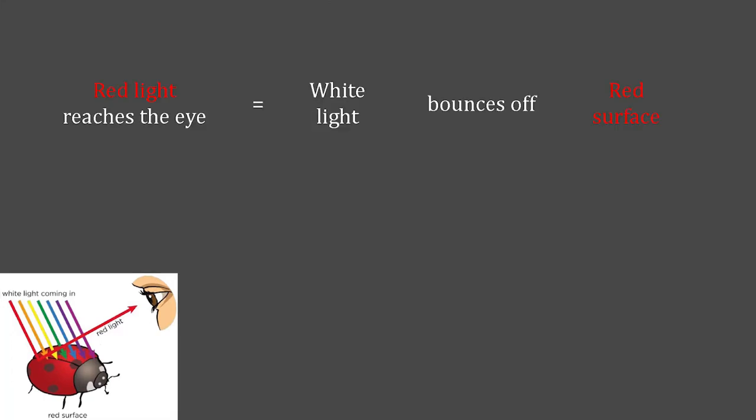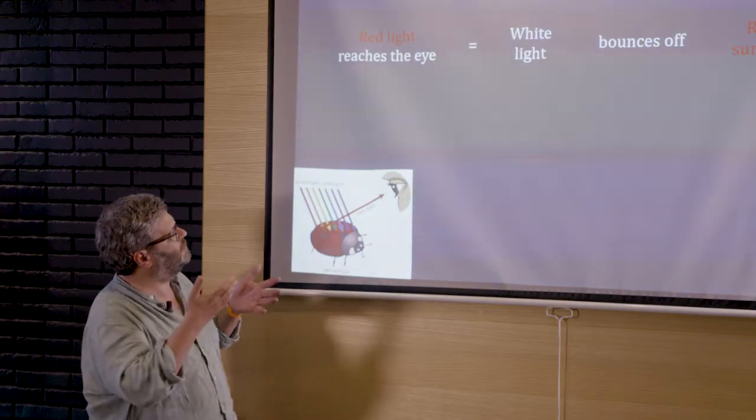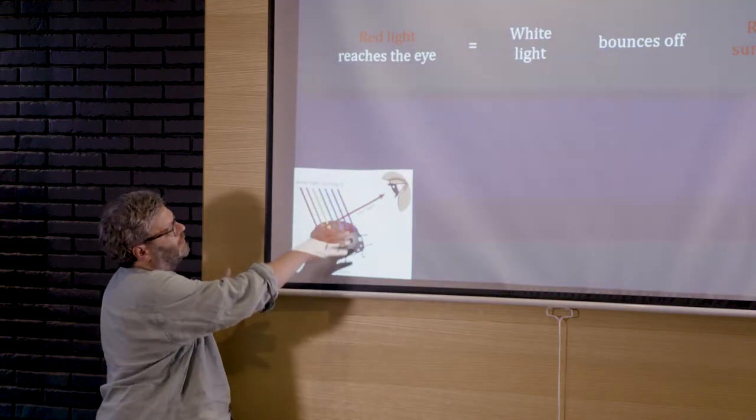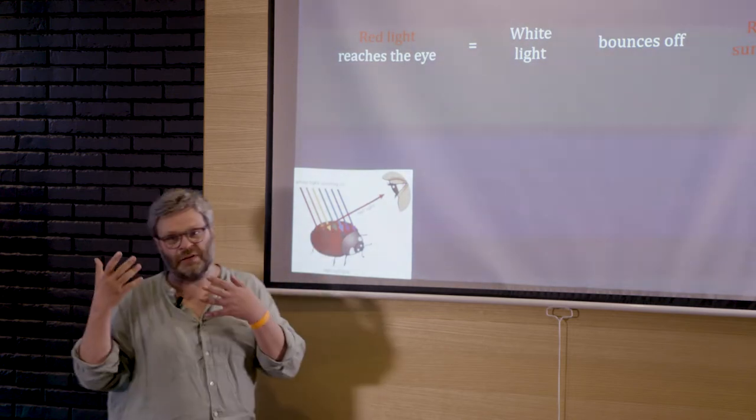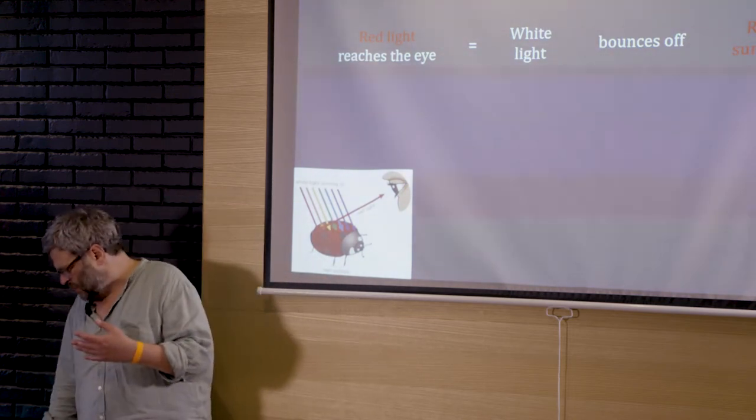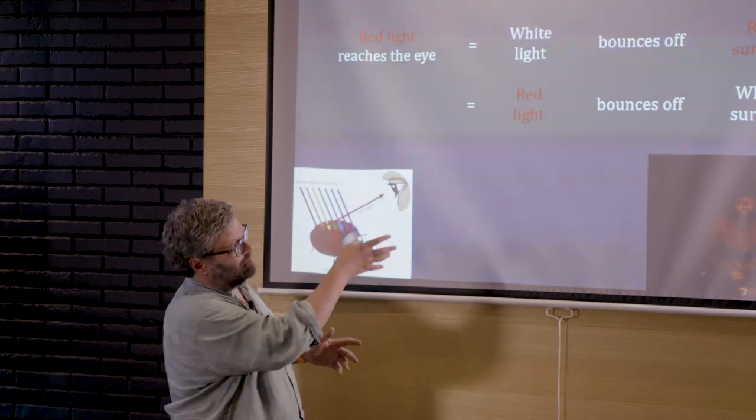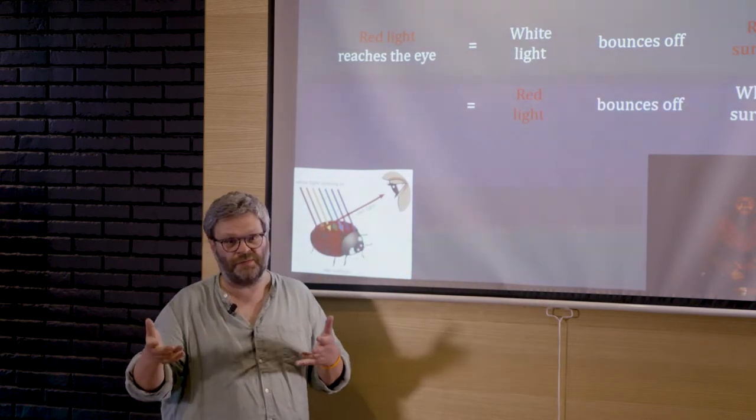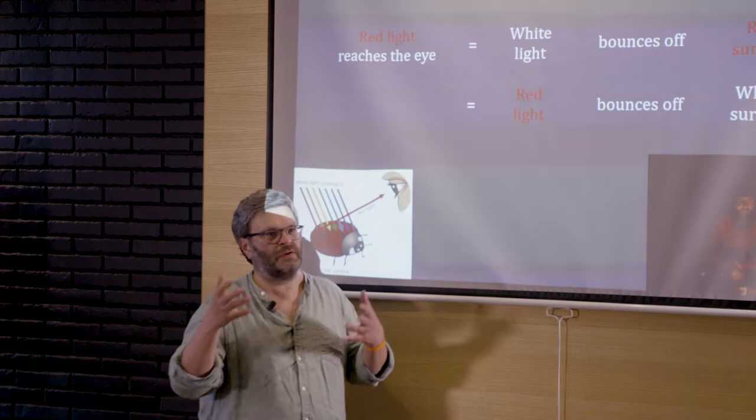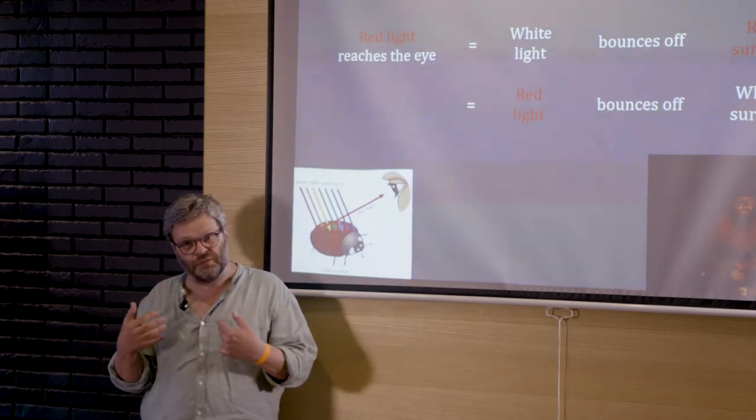Let me give you concrete examples. Let's say there's red light that reaches your eye. This could happen because there's white light that bounces off a red surface and then red light reaches your eye. But it could also happen because there's red light that bounces off a white or some other light colored surface and then red light will also reach your eye.